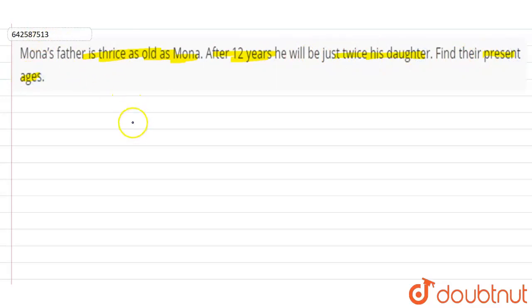So let Mona's age equal x years. Now in the question it is saying that Mona's father is thrice as old as Mona. So Mona's father age equals 3x years, because in the question it is saying that Mona's father is thrice as old as Mona.